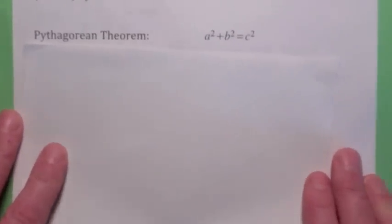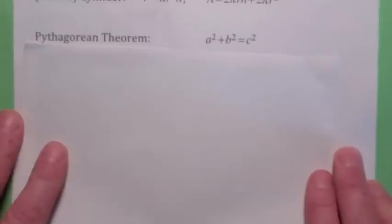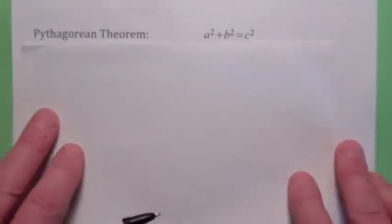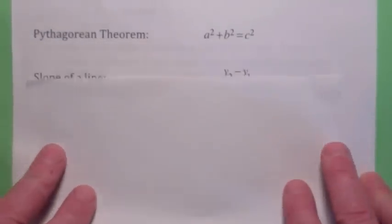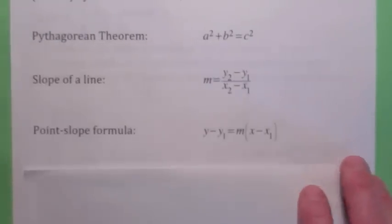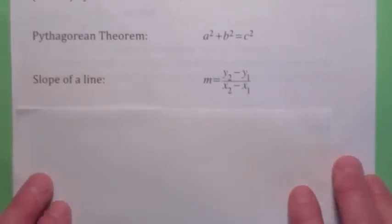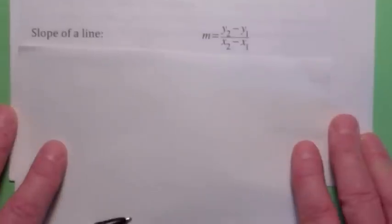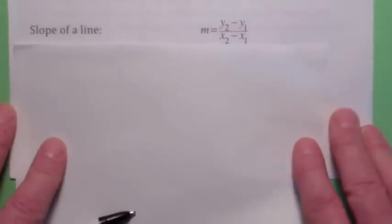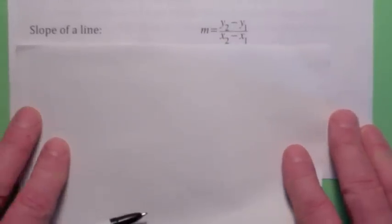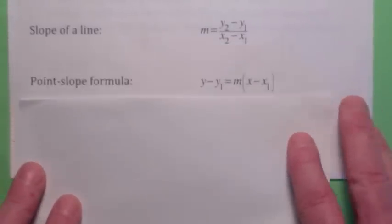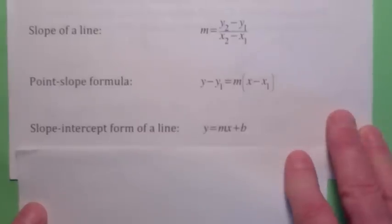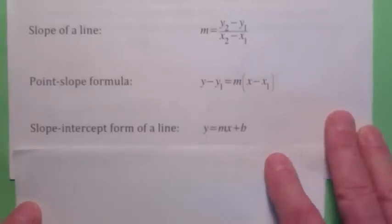The Pythagorean theorem, of course, comes up all the time. And the last three formulas — slope of a line, point-slope formula, and slope-intercept form of a line — we're going to see in section 1.10 and use a lot in this class.